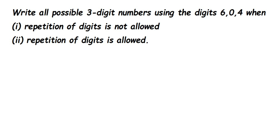Here is the question: write all possible three-digit numbers using the digits 6, 0, and 4 — when repetition of digits is allowed, and when repetition of digits is not allowed. Repetition not allowed means you should not repeat the numbers, and repetition allowed means you can repeat the numbers multiple times.